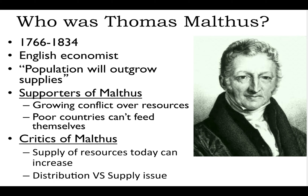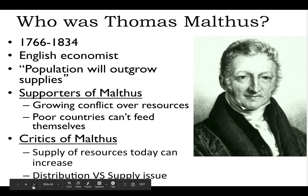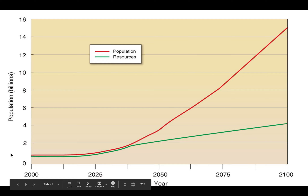Critics of Malthus — called cornucopians — believe that the supply of resources can increase through technological development, and that advanced technology can produce higher productivity of needed nutrition for a growing population, negating the distribution and supply issue.